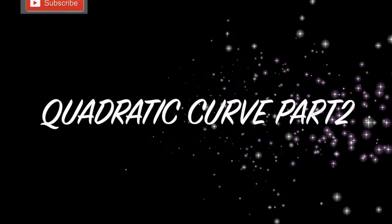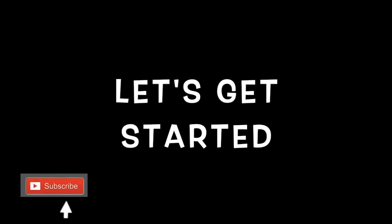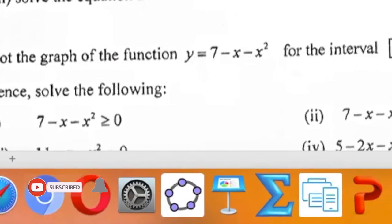Today we'll be doing quadratic curve part 2. Let's get started with an example where we're going to have a being less than 0 to have a maximum curve. y equals 7 minus x minus x squared for the interval negative 4 and 3.